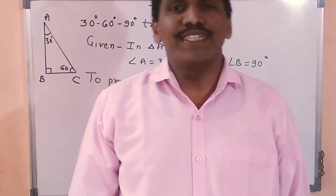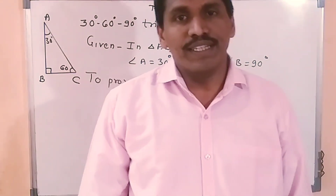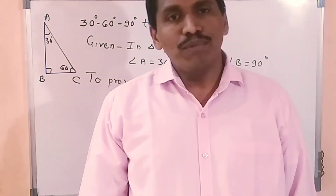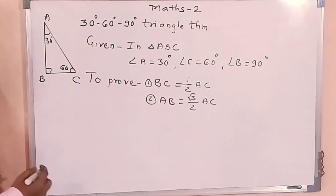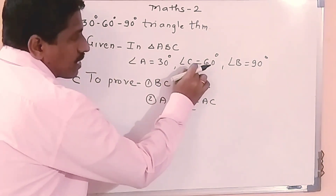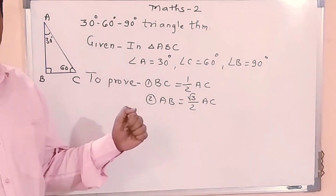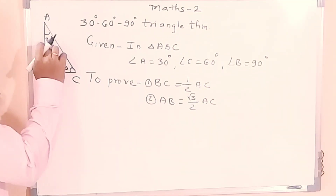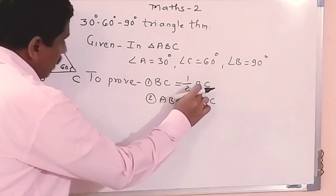What is the 30-60-90 degree triangle theorem? If the measures of angles of a triangle are 30 degrees, 60 degrees, and 90 degrees, then the side opposite to 30 is half of the hypotenuse, and the side opposite to 60 is root 3 upon 2 times the hypotenuse. In triangle ABC, angle A is 30 degrees, angle C is 60 degrees, angle B is 90 degrees. Angle A is 30 degrees, so the opposite side BC is half of AC, the hypotenuse.